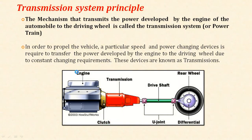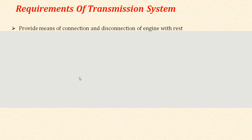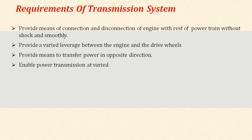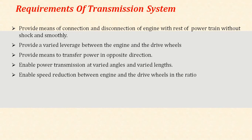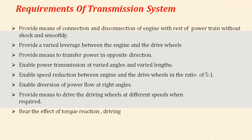Now we can see the requirements of the transmission system. It provides means of connection and disconnection of the engine with the rest of the power train without shock and smoothly. It provides varied leverage between the engine and the drive wheels, provides means to transfer the power in opposite direction, enables power transmission at varied angles and varied lengths, and enables speed reduction between the engine and the drive wheels.